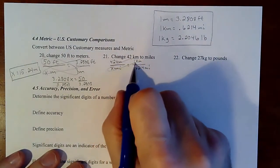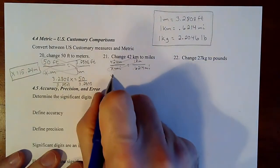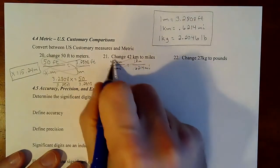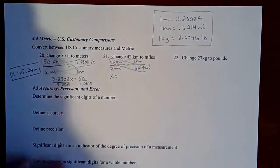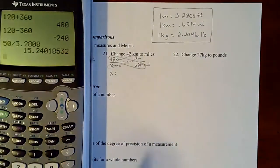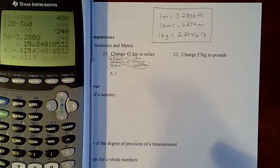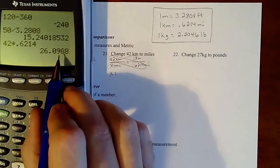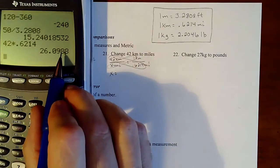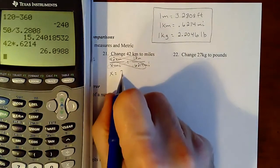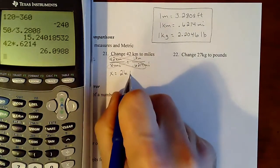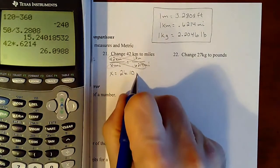And then that is equivalent to 0.6214 miles. So if we cross multiply, we'll take that one times that one, which is x. And then 42 times this one is going to be 42 times 0.6214. And then we'll take that out two decimal places. So that eight is going to make that nine a 10, which actually makes it 26.10 miles.